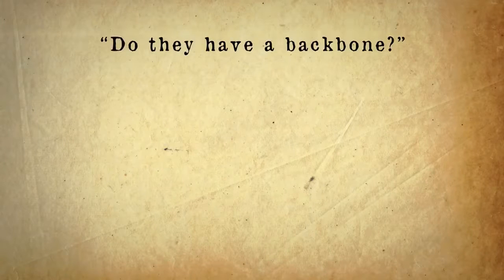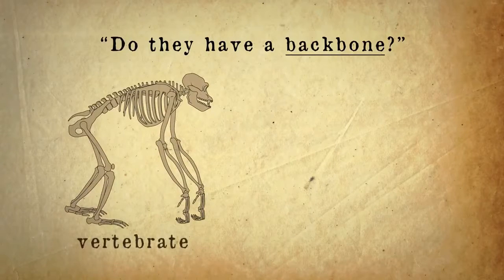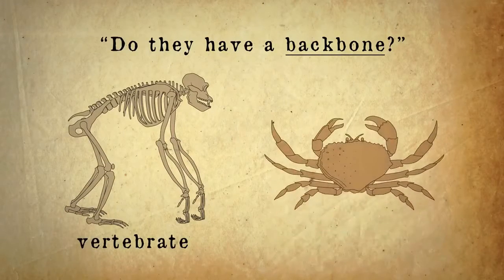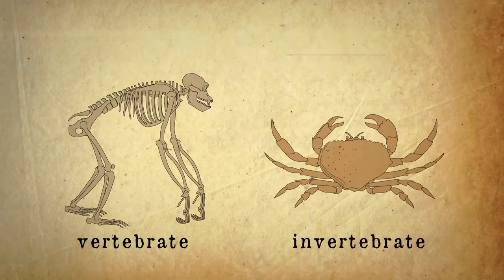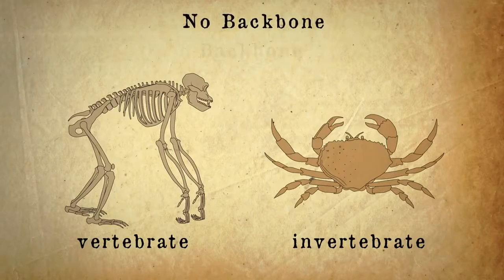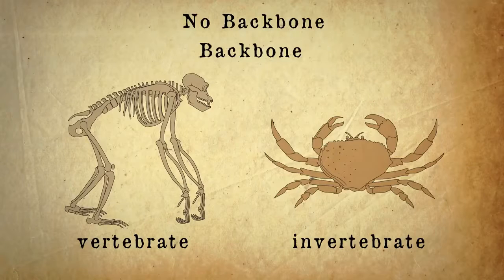A big question to ask is: do they have a backbone? If yes, they are a vertebrate. If no, they are an invertebrate. This can be tricky to remember — think of it this way: 'no backbone' is longer to say than 'backbone,' so no backbone must be invertebrate, and backbone is just vertebrate.